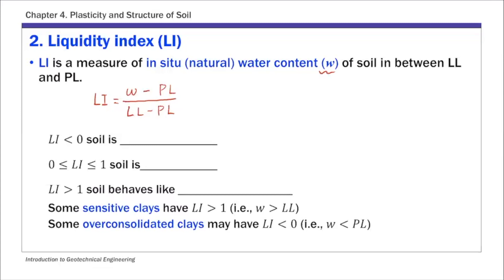Based on LI value, you can tell the consistency of soil, the proper state. When LI is smaller than zero, soil is non-plastic. If you look at the definition, LI is smaller than zero when the natural water content W is smaller than its plastic limit. So that's when LI is smaller than zero.